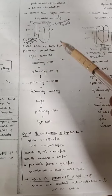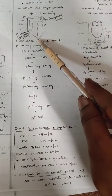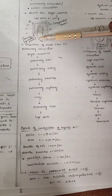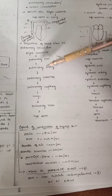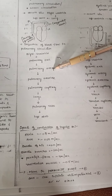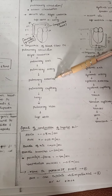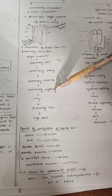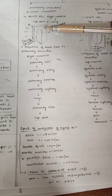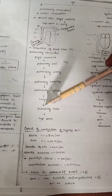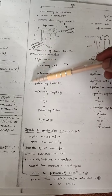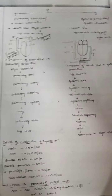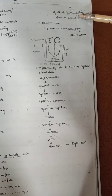The sequence of pulmonary circulation: right ventricle to pulmonary arch, pulmonary arch to pulmonary artery, pulmonary artery to pulmonary arterioles, then to pulmonary capillaries, pulmonary capillaries to lungs, then to pulmonary veins, and pulmonary veins to the left atria. This circulation is called pulmonary circulation.